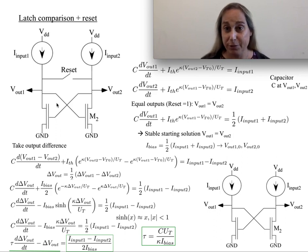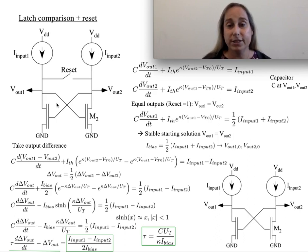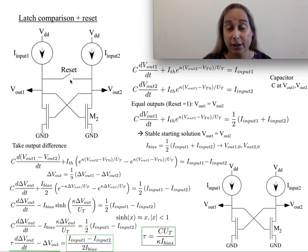There are some issues that can happen with mismatch, but assuming things are matched, any difference in the current will move you in one direction or the other. Since it will get stuck on one side, you often want to set the structure at its midpoint first so that whatever shift in current occurs, you can move it from there. Often you'll have a reset structure where under reset the outputs are shorted, and then you lift the reset and the dynamics happen from there.